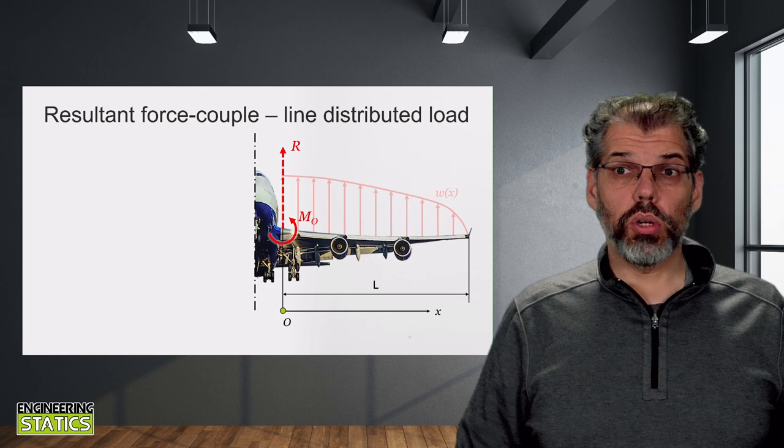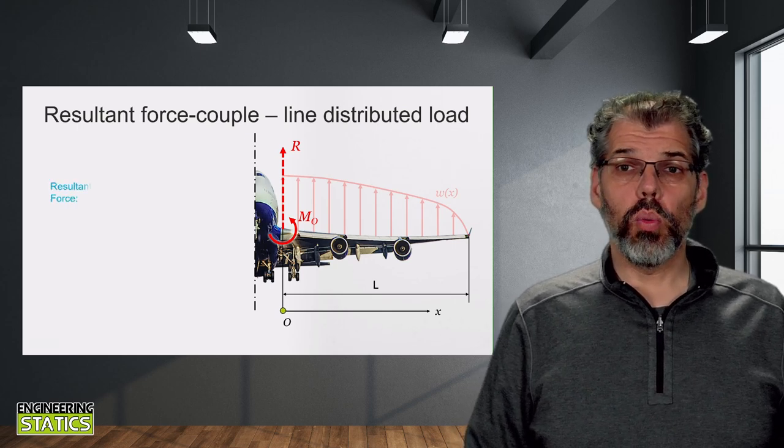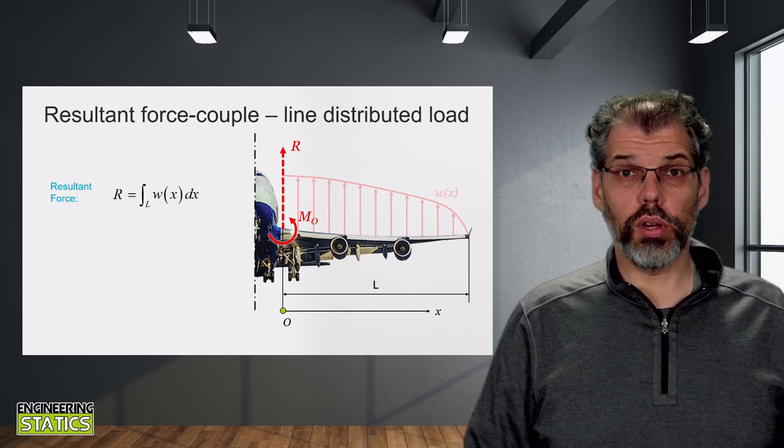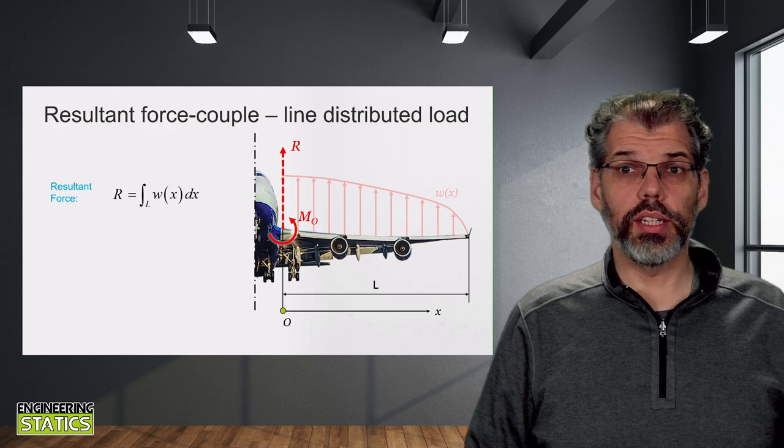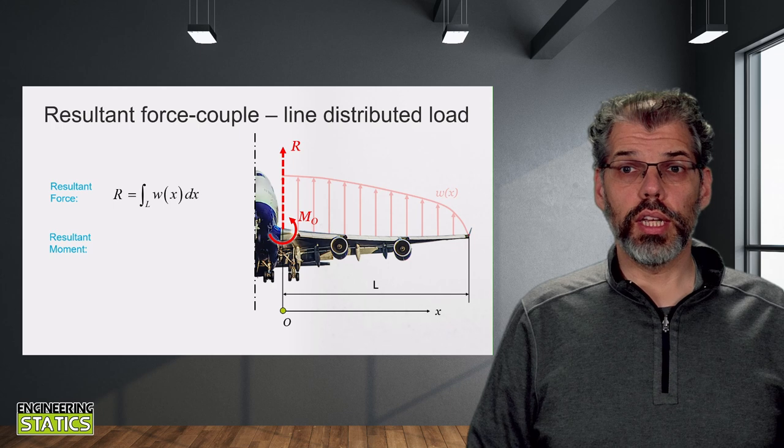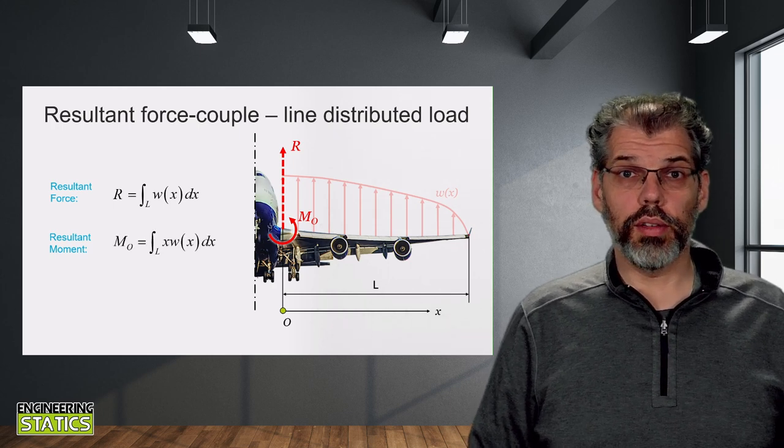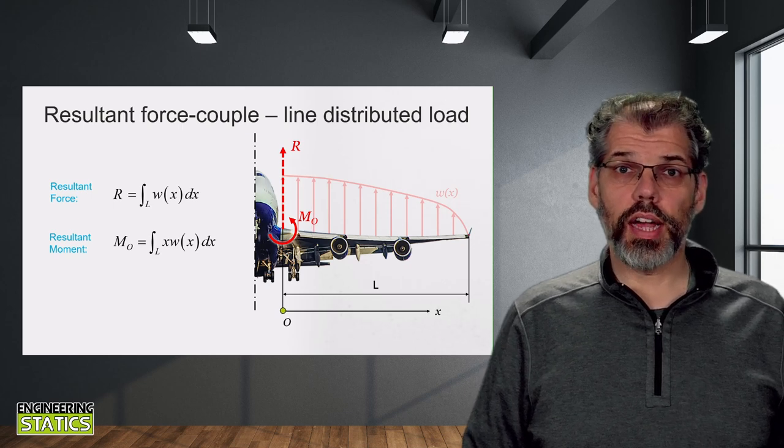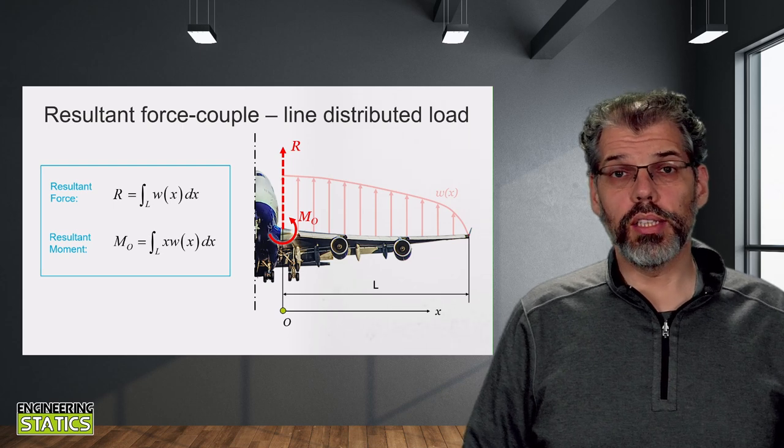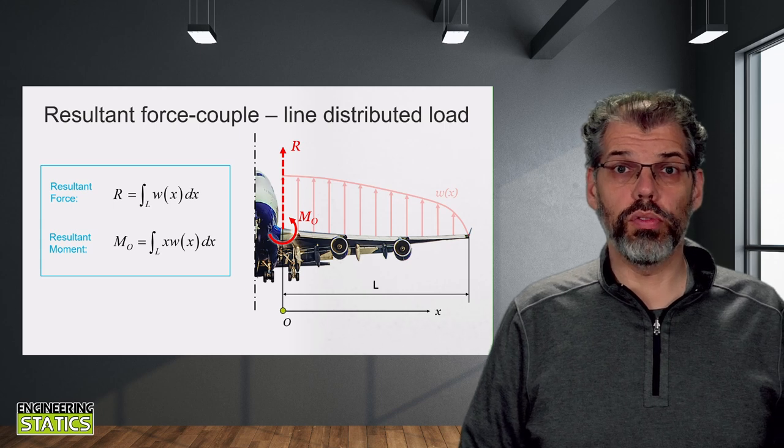We can perform that integration quite easily, or transform that into an integral form quite easily, where the resultant force R is simply the integral of dr over the entire length, where dr was w of x times dx. Similarly for our resultant moment, it is going to be equal to the integral of our infinitesimal moment over the length of the wing, which is the integral of x times w of x dx. So this gives us our two generalized integral equations for our resultant force couple at the root of the wing.